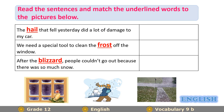Now read the sentences and match the underlined words to the pictures below. We have three pictures — number one, two, and three — each corresponding to one of these vocabulary items: hail, frost, and blizzard. Please read the sentences carefully and try to guess the meaning of each word, then match them with their pictures.